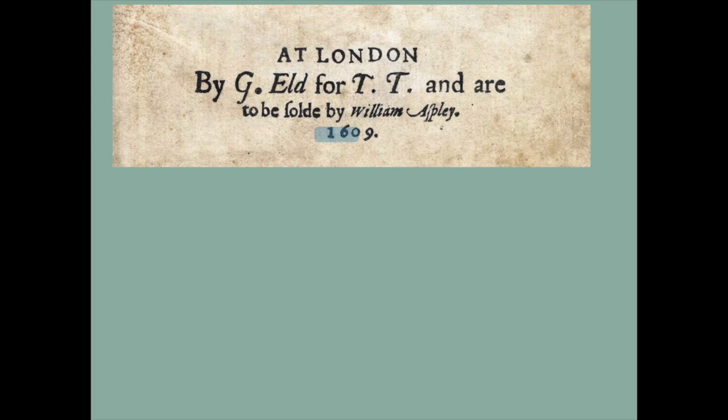The bottom of the cross pointing down at that T is about where Shakespeare is buried — I'm not going to deal with that today. Now, number two: let's look at the bottom of the title page, where we see written in the center 'D for T.' What does that mean?